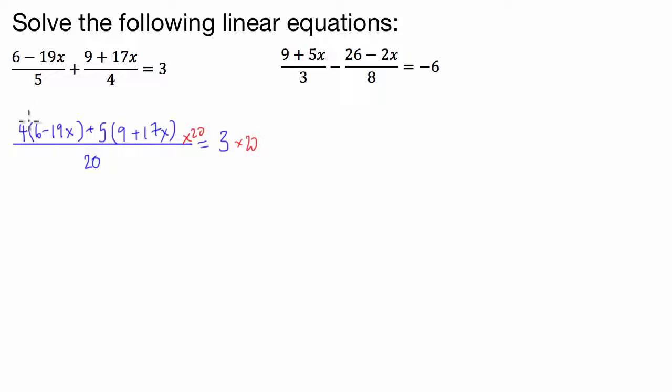And I'm going to multiply into these brackets. Cool. So I've got 4 times 6 is 24, minus 4 times 19x is negative 76x. Then I've got plus 5 times 9 is 45, and 5 times 17x, 35 plus 50 is 85x. So 3 times 20 is 60.